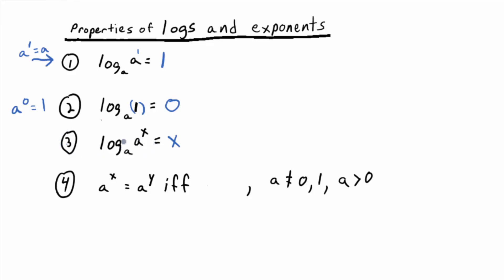Well, I mean, what is this saying in exponential form? A to the X is equal to A to the X. A to the X is equal to itself. Yeah, okay, that's true.